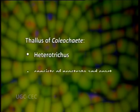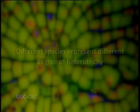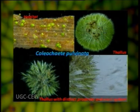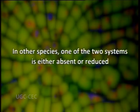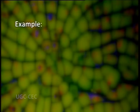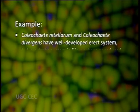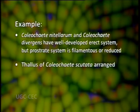Now we come to its thallus structure. The thallus of Coleochaete is typically heterotrichous, consisting of a prostrate and erect system. Different species represent different degrees of heterotrichy. The heterotrichous habit is best seen in Coleochaete pulvinata, which has well-developed prostrate and erect systems. In other species, one of the two systems is either absent or reduced; for example, in Coleochaete nitellarum and Coleochaete divergens there is a well-developed erect system but the prostrate system is filamentous or reduced.